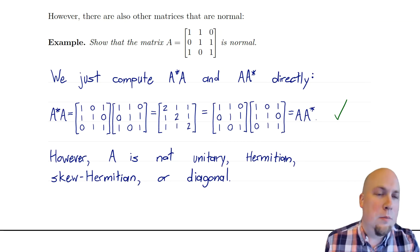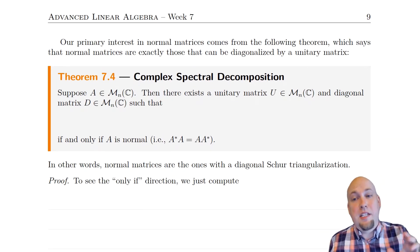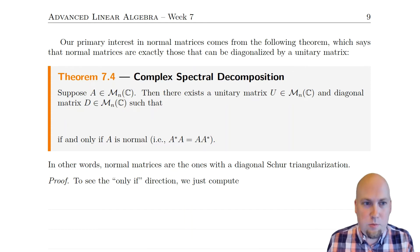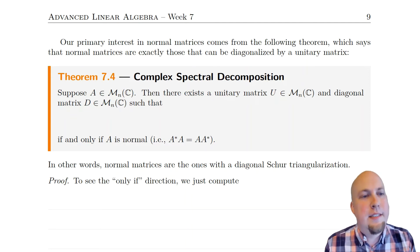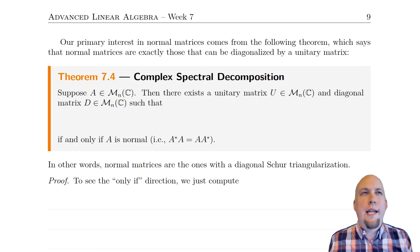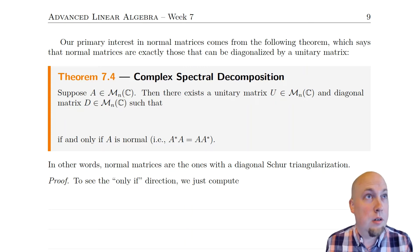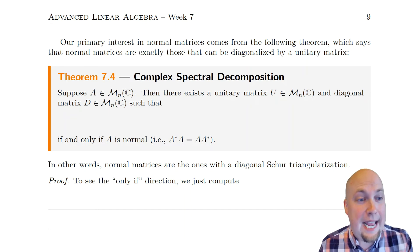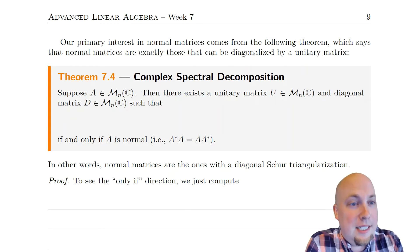Why do we care about normal matrices? It seems like a somewhat arbitrary definition — why do we care about a matrix commuting with its conjugate transpose? The answer is given by something called the complex spectral decomposition. One way of thinking about this theorem is: remember we learned that every square complex matrix can be Schur triangularized — it can be made upper triangular by a unitary similarity transformation. Well, what if we wanted to turn a matrix into a diagonal matrix via a unitary similarity transformation? Which matrices can we make that work for?